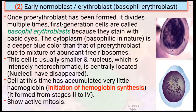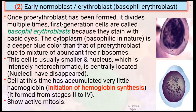Secondly, early normoblast or basophil erythroblast. Once proerythroblast has been formed, it divides multiple times. First generation cells are called basophil erythroblast because they stain with basic dye. The cytoplasm is a deeper blue color than the proerythroblast due to an abundance of free ribosomes. This cell is usually smaller, with a nucleus that is intensely heterochromatic and centrally located. Nucleoli have disappeared. Cells at this time have accumulated very little hemoglobin, meaning initiation of hemoglobin synthesis starts here. It also shows active mitosis.